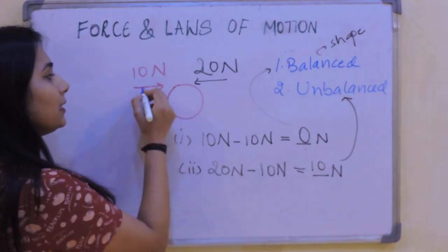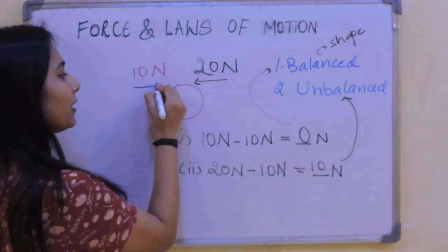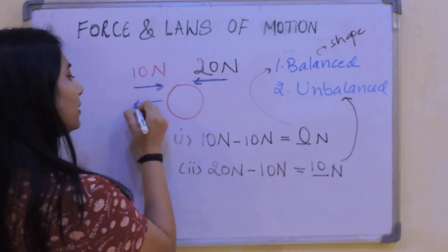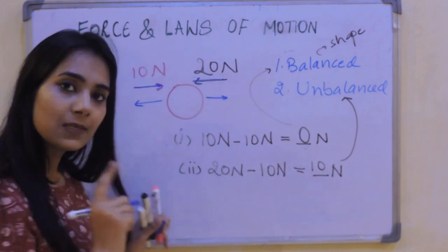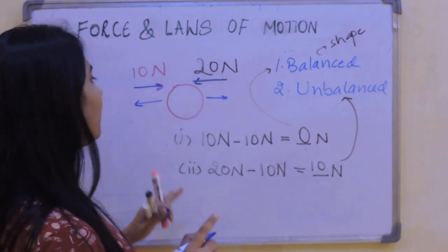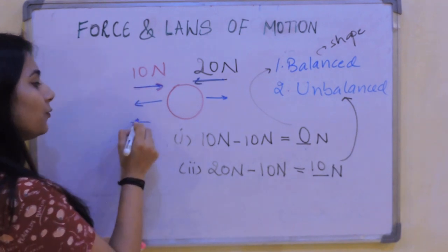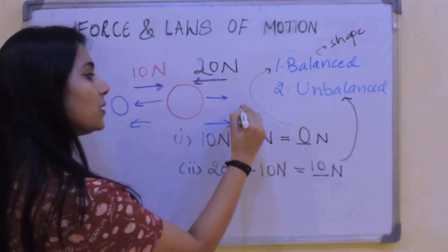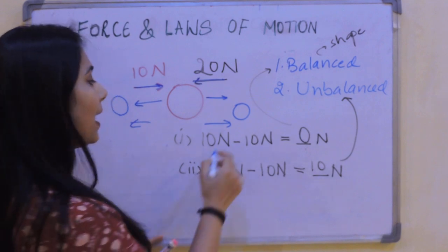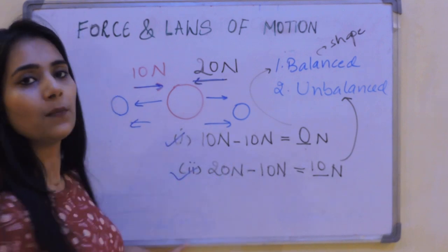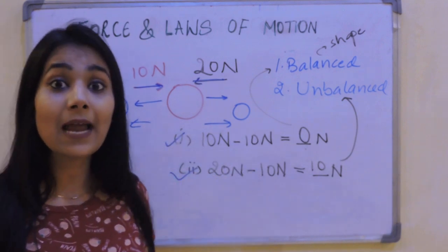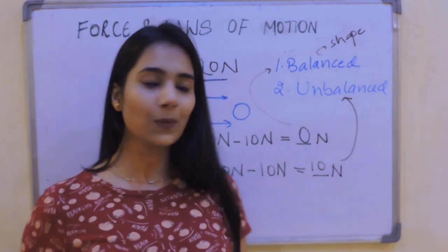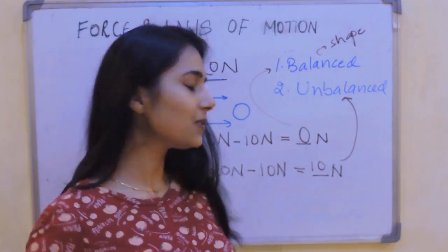Now this was in the case when both forces are in the same direction. What if they were in opposite directions? We sum up all forces acting in each direction and then apply the same formula — take the bigger total minus the smaller total. This is the standard formula we use. Now let's quickly do a few more questions to understand balanced and unbalanced force.